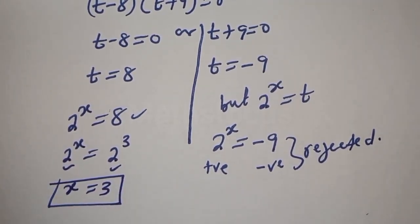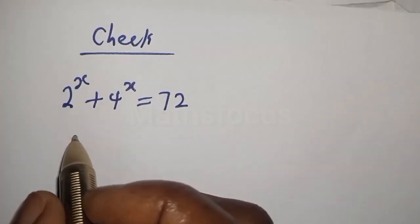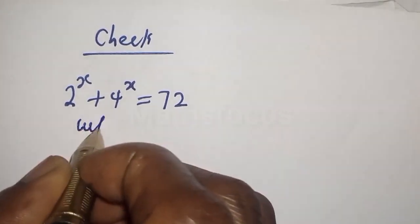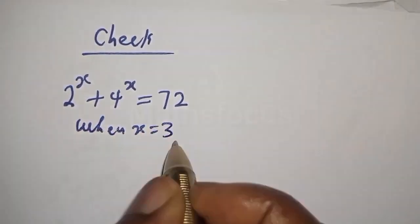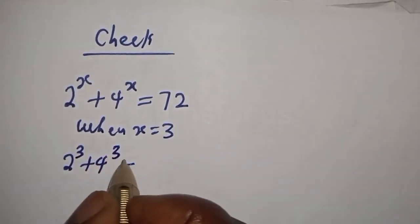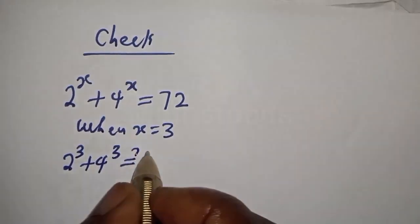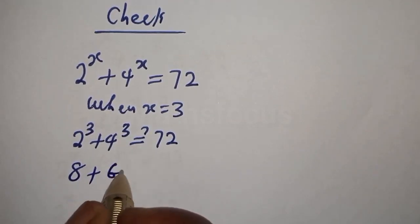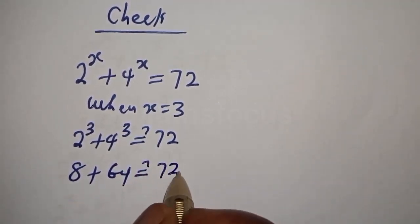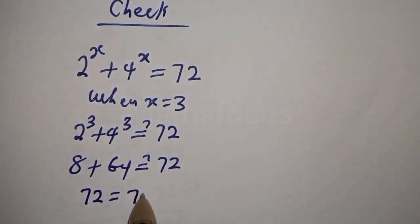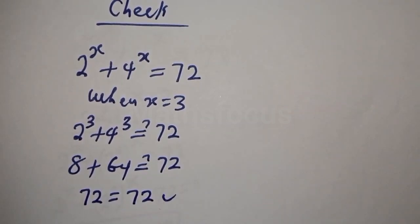We can check to confirm if our answer is right. To check: 2 raised to power s plus 4 raised to power s equals 72. When s equals 3, this is 2 raised to power 3 plus 4 raised to power 3, which must equal 72. Then 2 cubed is 8, and 4 cubed is 64, and 8 plus 64 equals 72. We satisfy the equation at s equals 3.